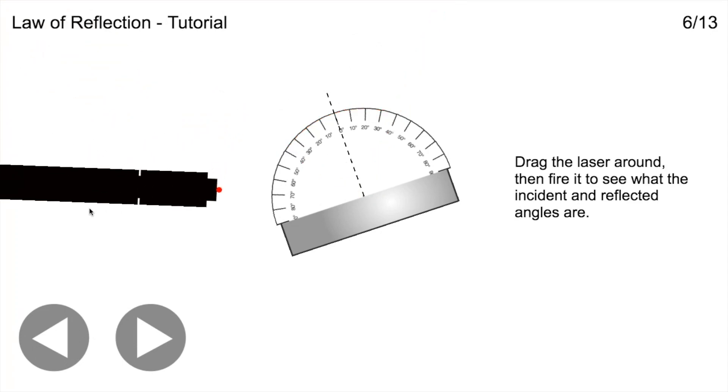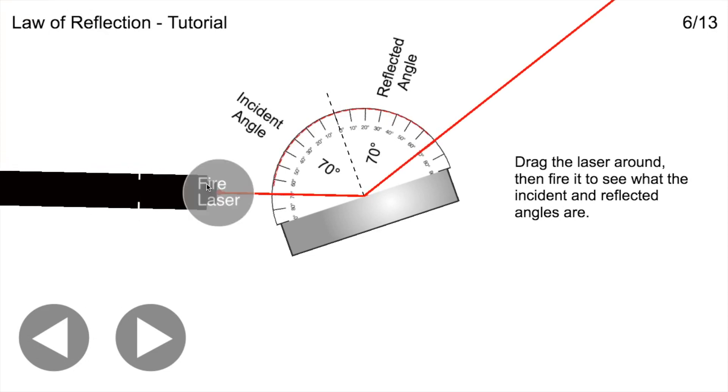If it comes in at a greater angle, let's say about 70, it's going to bounce off at 70. It's not going to turn and make a different type of angle. It's going to come in and go off at the same angle.